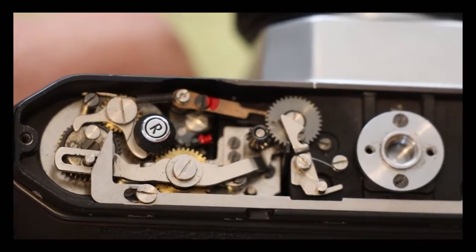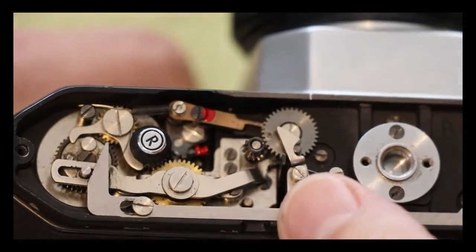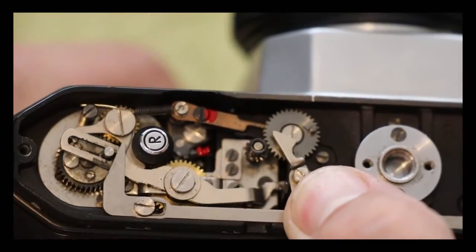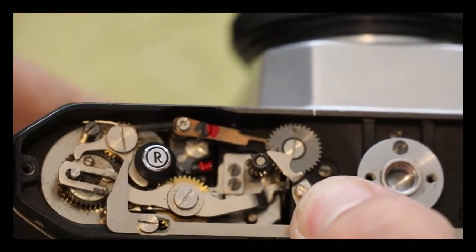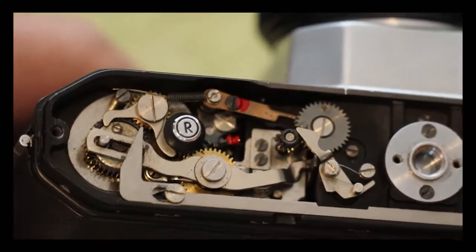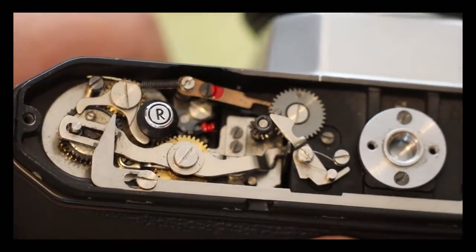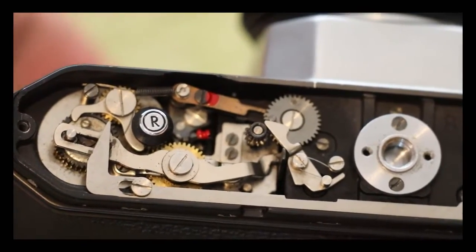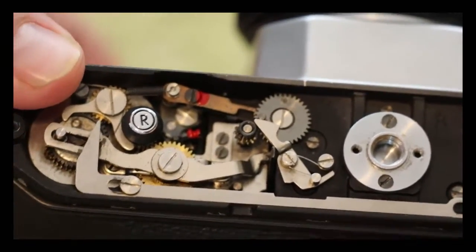Now, if I artificially keep that lever from catching behind the lever and I wind it on and release my wind lever, now the shutter won't release.